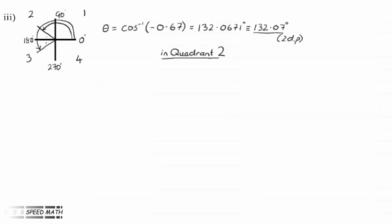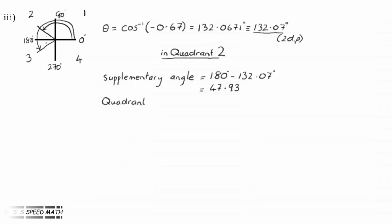The supplementary angle equals 180 minus 132.07 degrees, which makes the supplementary angle equal to 47.93 degrees. In quadrant 3, theta equals 180 plus 47.93 degrees, which makes theta equal to 227.93 degrees.